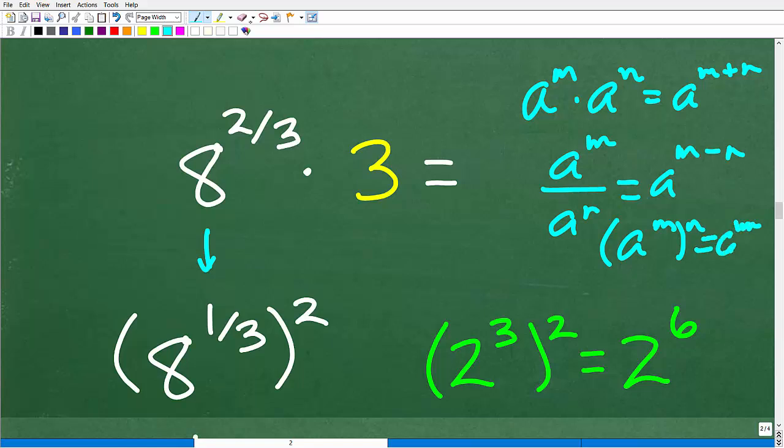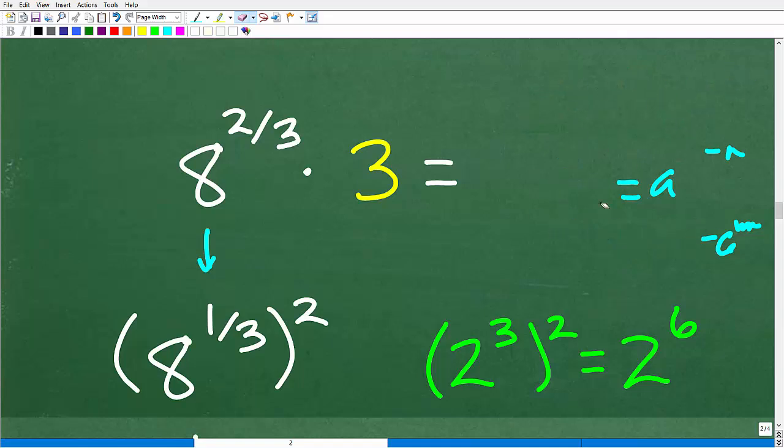Some of you might be saying, hey Mr. YouTube Math Man, you're going a little crazy here with all these properties. Well, these are things that hopefully you remember. These are the formal properties. But here is an example of a property that we need here. So 2 to the 3rd squared is equal to 2 to the 6th.